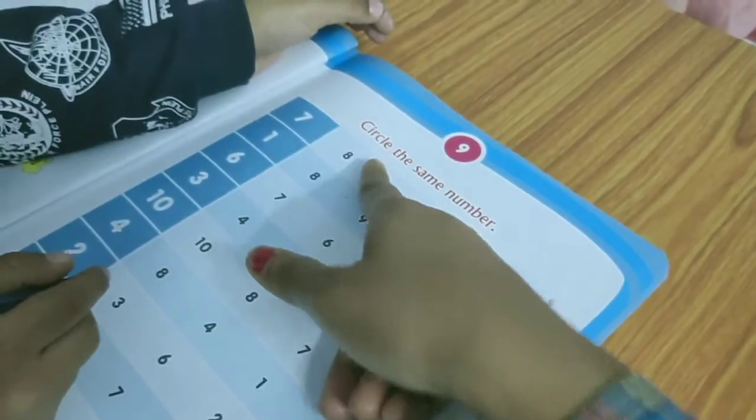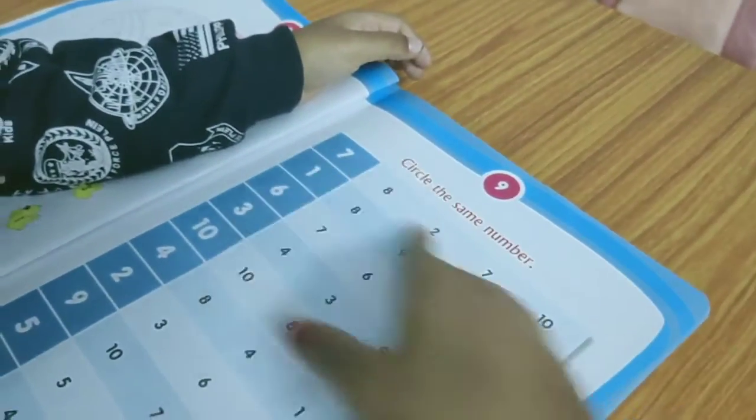Let's circle the same number, okay, same number circle coro.